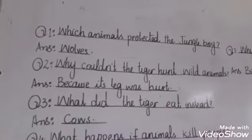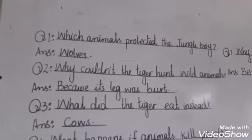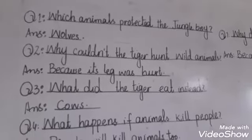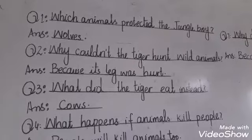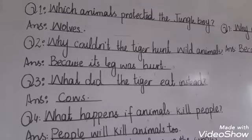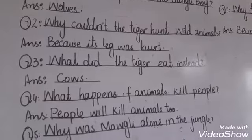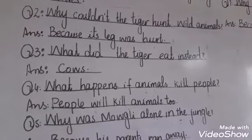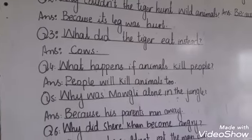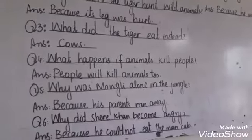Which animals protected the jungle boy from the tiger? Wolves. Why couldn't the tiger hunt wild animals? Because its leg was hurt. What will the tiger eat instead? Cows. What happens if animals kill people? People will kill animals too.